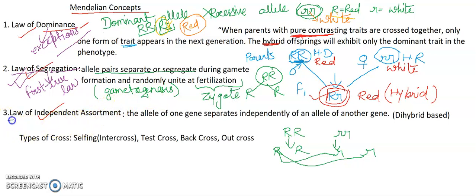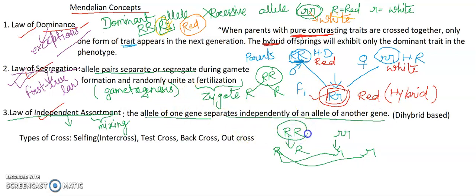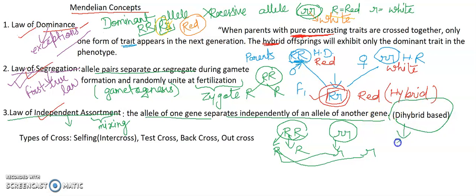Ab agle law pe aate hain — that is the law of independent assortment. Independent ka matlab they are not dependent in any way. Assortment ka matlab hota hai mixing — assortment means mixing. Allele of one gene separate independently of an allele of another gene. Jo allele ek gene ki hai, they separate independently — they are not dependent on each other for the separation process. They are independently assorting with each other, aur yeh law totally dihybrid pe based tha, jisme hum 2 characters lete hain.